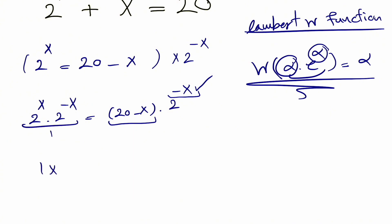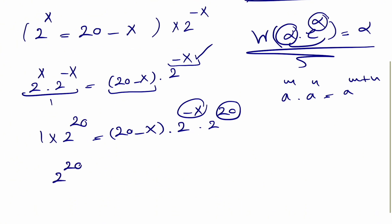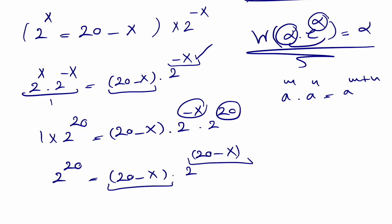We multiply both sides by 2^20. Using the law of exponents — a^m times a^n equals a^(m+n) — we get 2^20 equals (20 minus x) times 2^(20 minus x). We're building the alpha structure, but the Lambert function requires base e rather than base 2, so we need to convert.